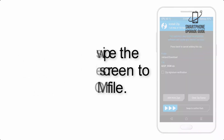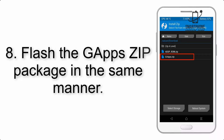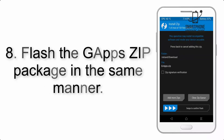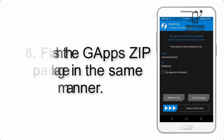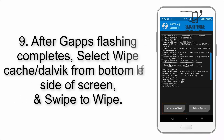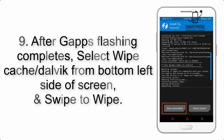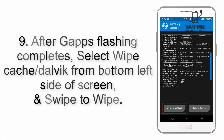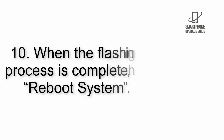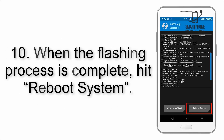Step 7: Swipe the button on the screen to install the ROM file. Step 8: Flash the GApps zip package in the same manner. Step 9: After GApps flashing completes, select Wipe Cache and Dalvik from the bottom left side of the screen and swipe to wipe.